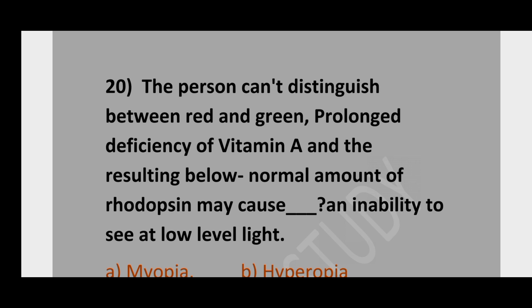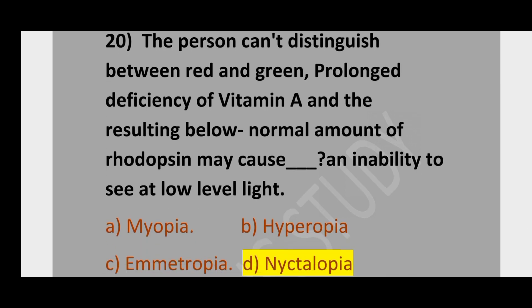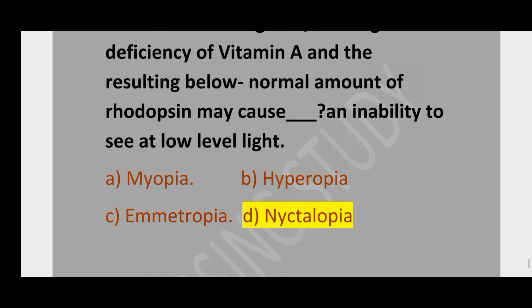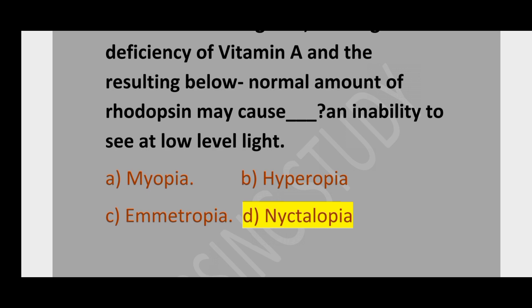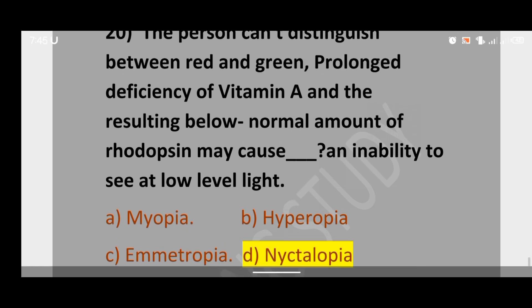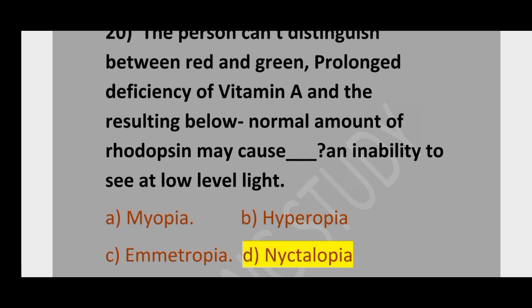Question number 20. The person who cannot distinguish between red and green color — and prolonged deficiency of vitamin A and the resulting below-normal amount of rhodopsin may cause inability to see at low light levels: option A, myopia; option B, hyperopia; option C, ametropia; option D, nyctalopia. The correct option is nyctalopia — deficiency of vitamin A causing inability to distinguish red and green color.